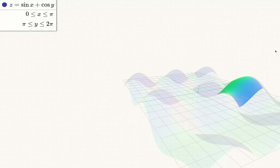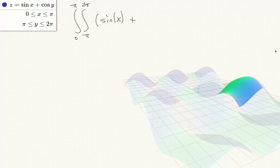Now let's see how that calculation would look in the other order. So if we go with π to 2π on the inside and 0 to π on the outside.